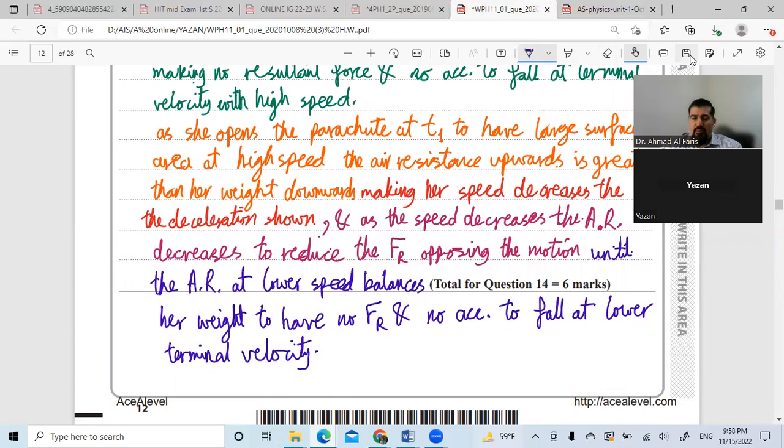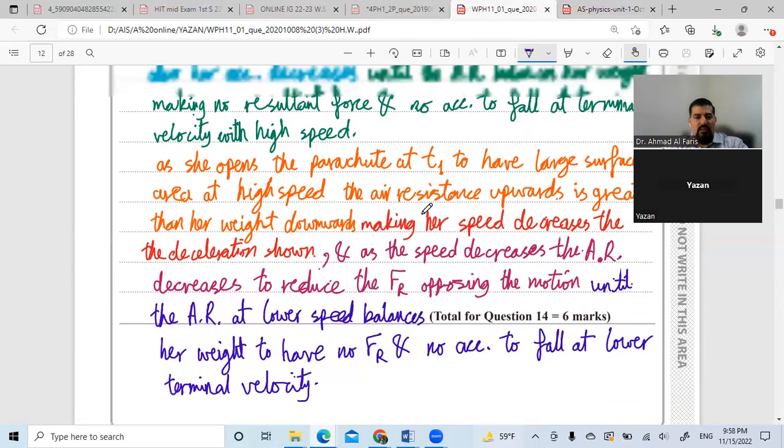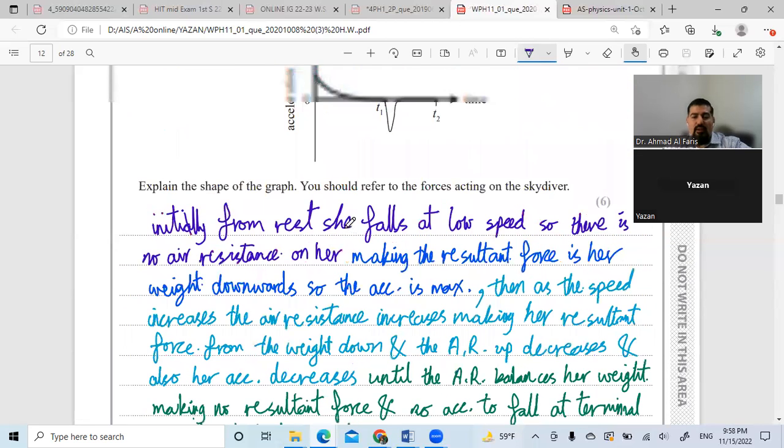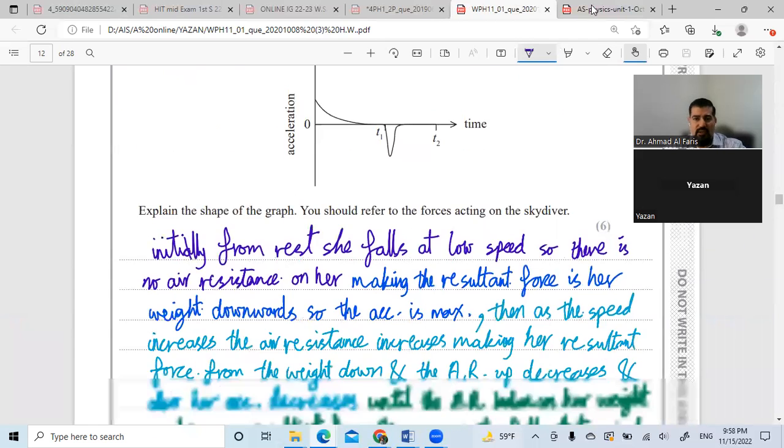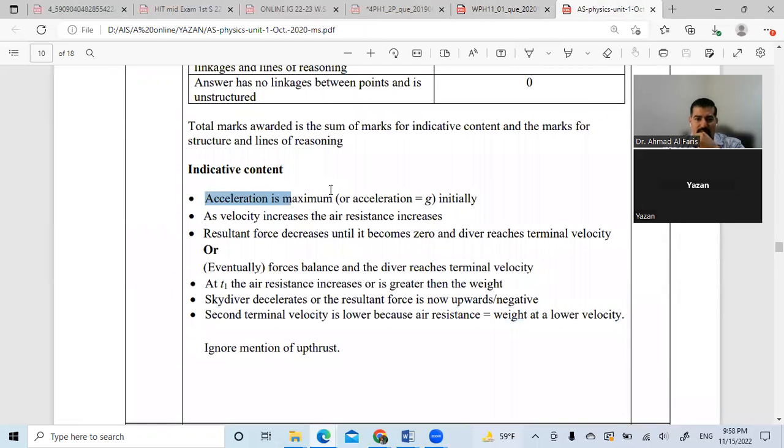So like this we get the whole marks in this type of question. We get all the ideas, all the linkage, and we get six out of six according to the mark scheme. The acceleration is maximum initially, as velocity increases air resistance increases, resultant force decreases until forces are balanced and the diver reaches terminal velocity.